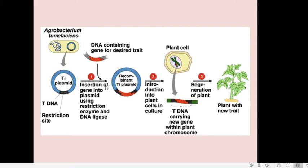There will be no induction of tumor, but our foreign gene will be expressed in the plant cell. We are using the natural ability of Agrobacterium tumefaciens as a natural genetic engineer for our purpose. Here we are using a disarmed pathogen — the ability to synthesize opines and the ability to induce tumors were the weapons, and those genes were removed. Instead we inserted our desired gene. That is why it is called a disarmed pathogen, and Agrobacterium tumefaciens is considered one of the most common vectors for transferring foreign genes into dicot plant cells.